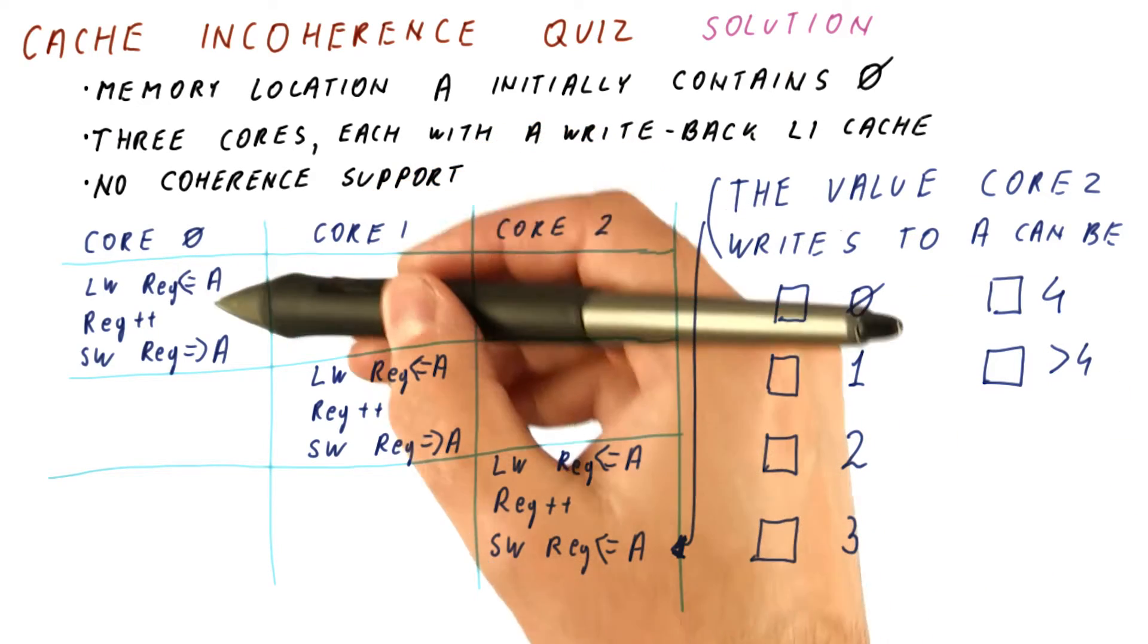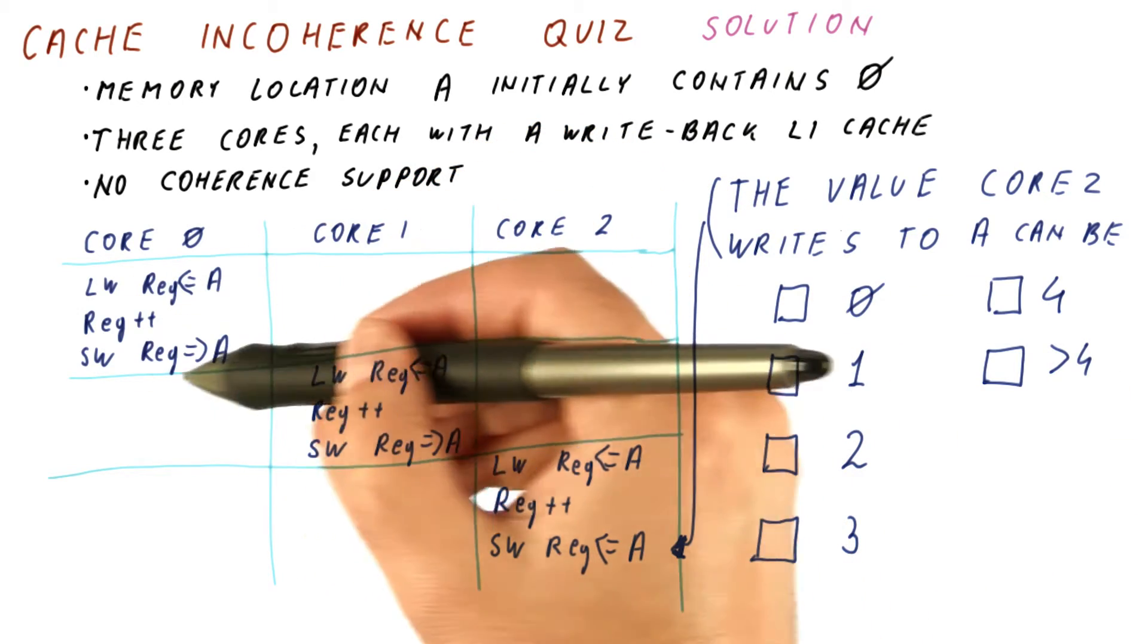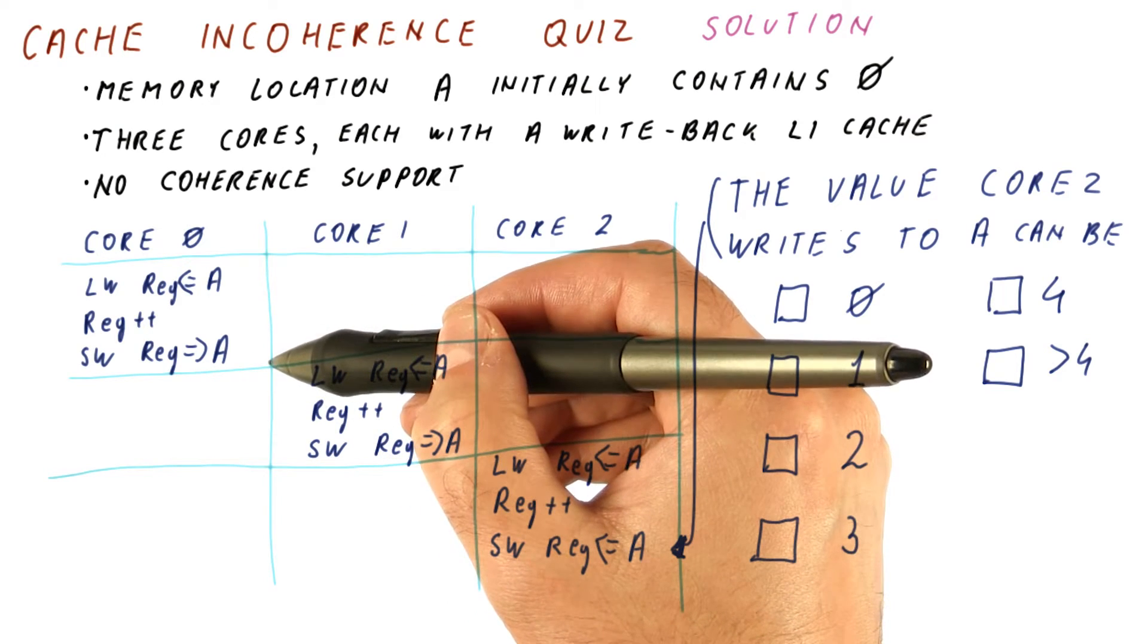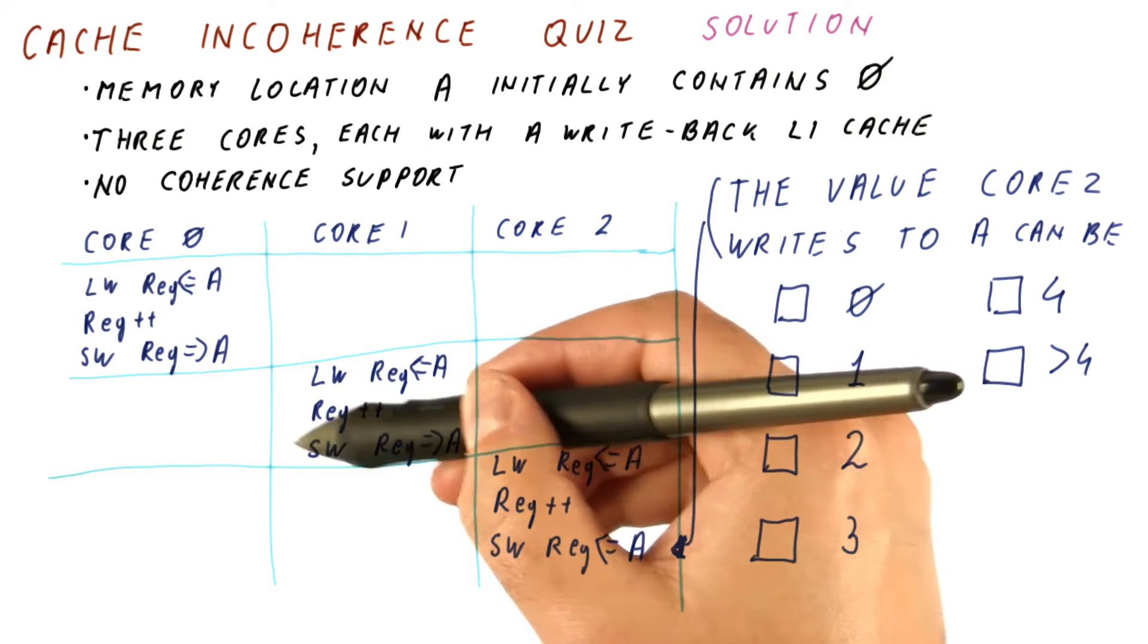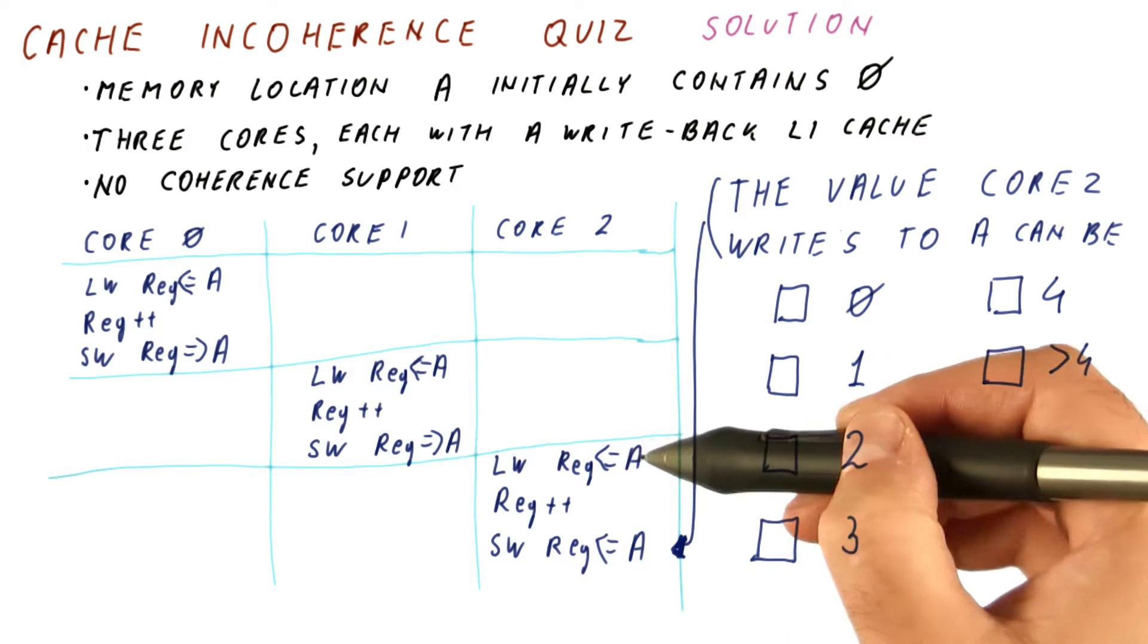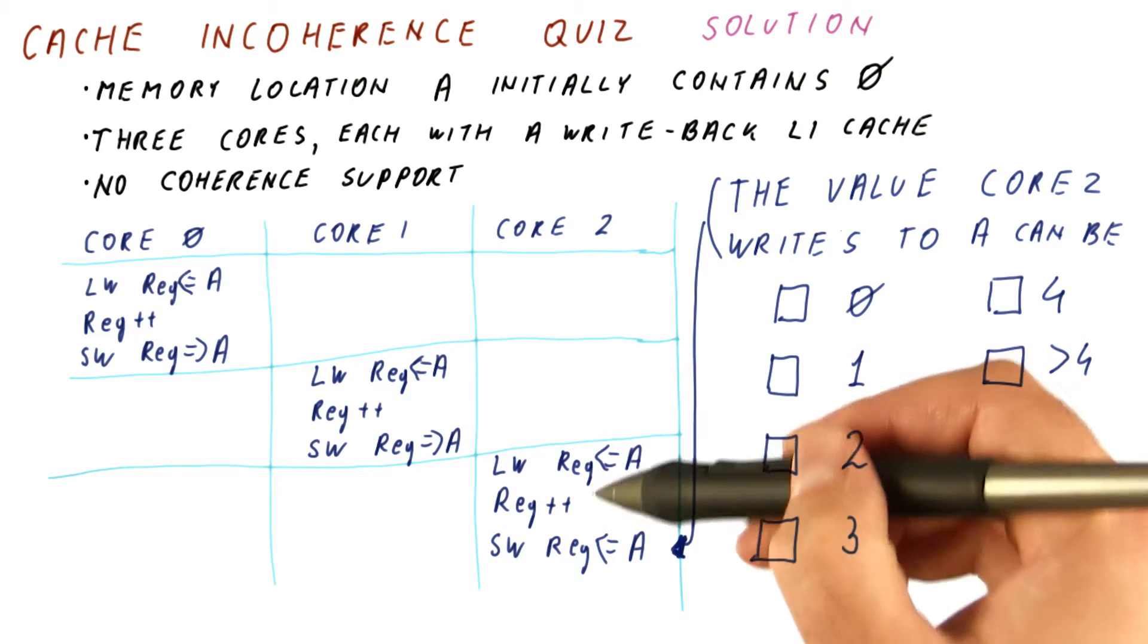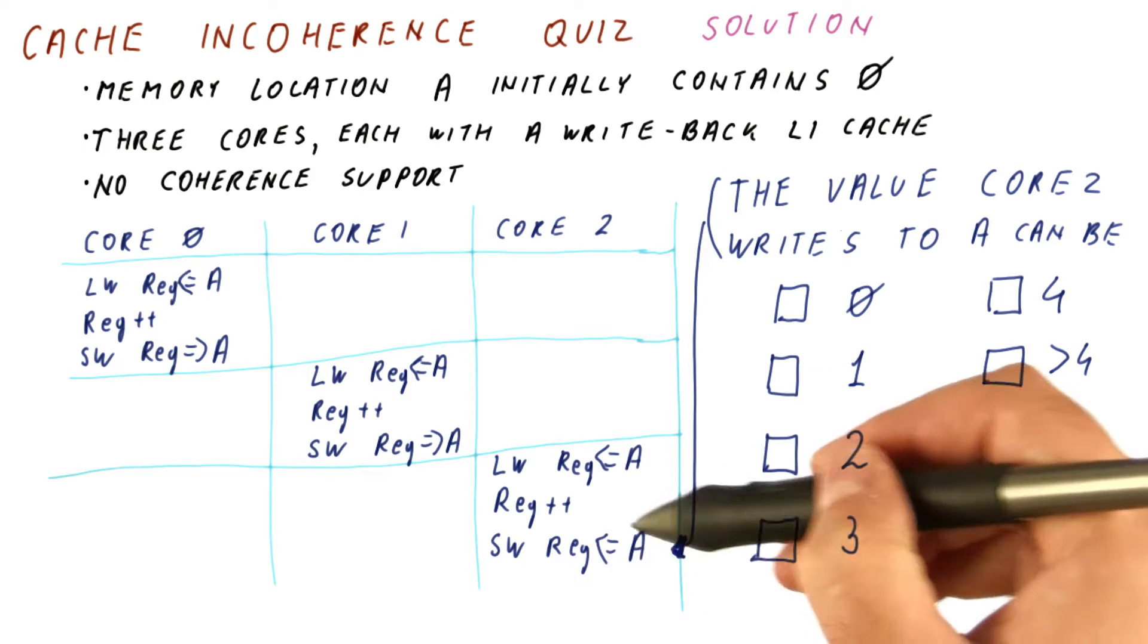The correct behavior would be for core 0 to do this, and then it replaces this from its cache, so that core 1 reads a 1 here, increments that, writes a 2, and then core 2 reads that, increments, and writes a 3.